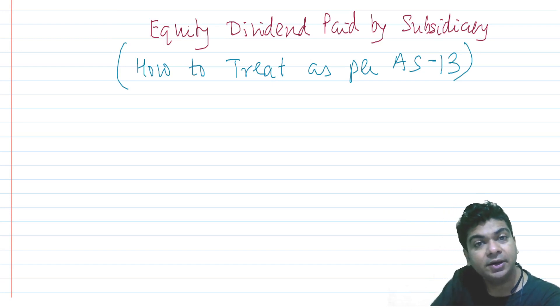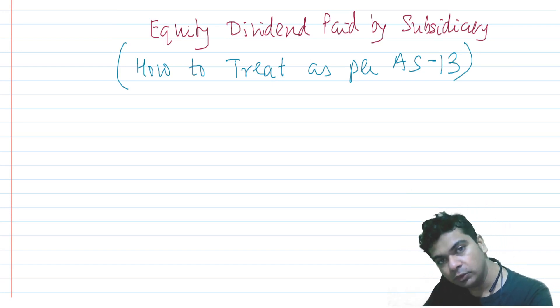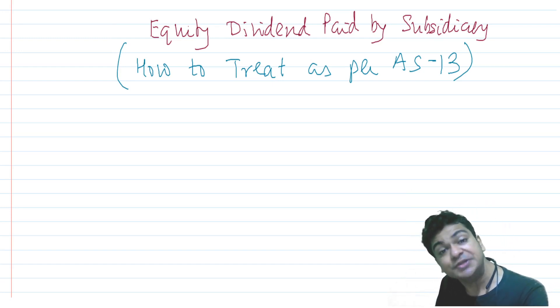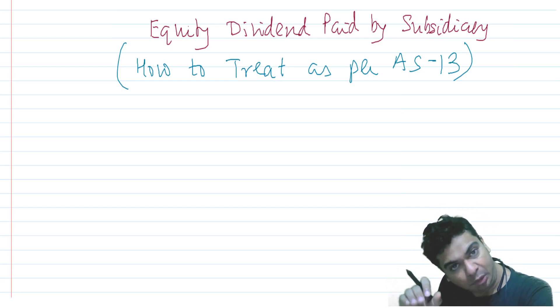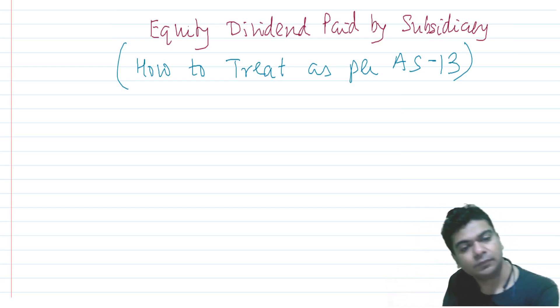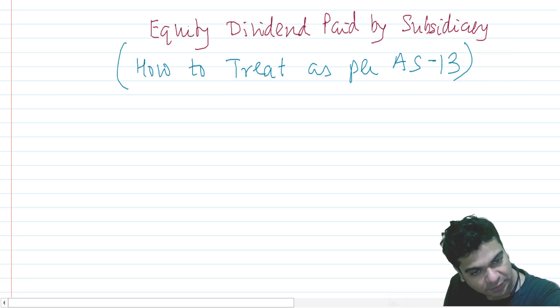As per AS 13, you should identify whether the dividend or the interest you are receiving is for the period before you acquired the investment or for the period after you acquired the investment. If the income is for the period before you acquired the investment, then such income cannot be credited to the P&L — it is considered to be a recovery of cost, meaning such income should be credited to the investment account.